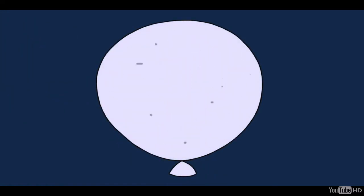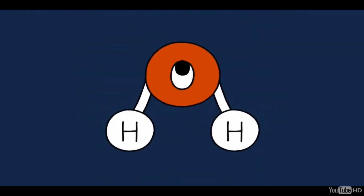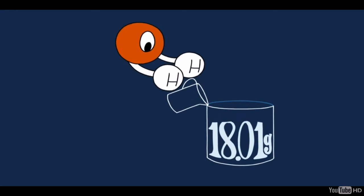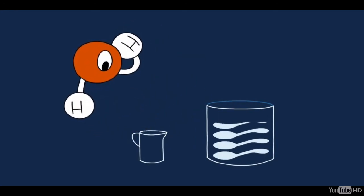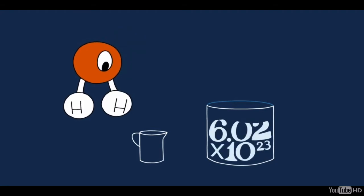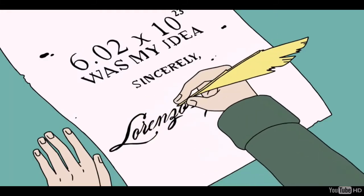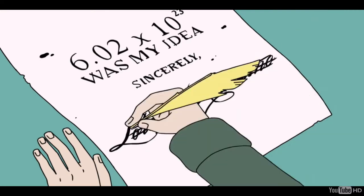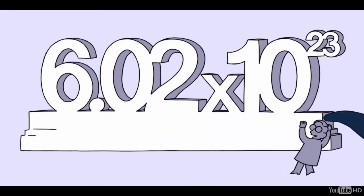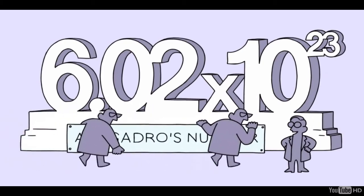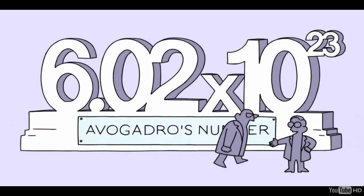This example is a little misleading because gases take up a lot of space due to the high kinetic energy of the gas particles. Instead, think of water molecules. If you pour 18.01 grams of water into a glass — which is 18.01 milliliters, or about three and a half teaspoons of water — you'll have 602 sextillion molecules of water. Since Avogadro was the first one to come up with this idea, scientists named the number 6.02 times 10 to the 23rd after him. It is simply known as Avogadro's number.